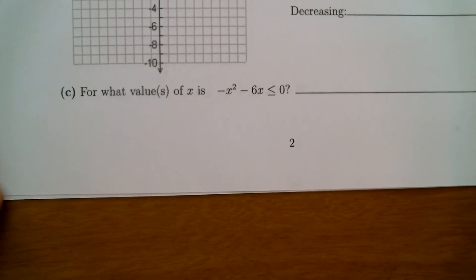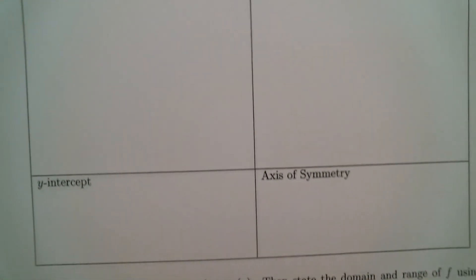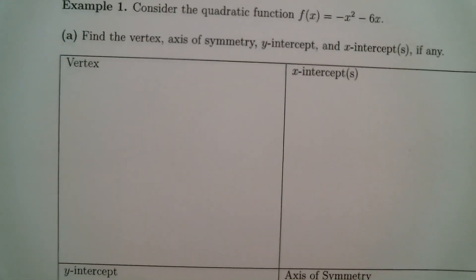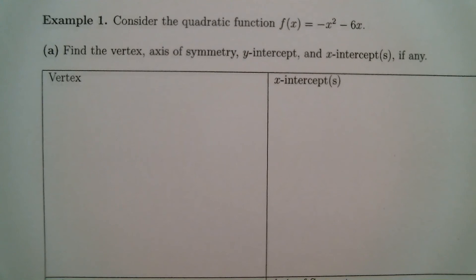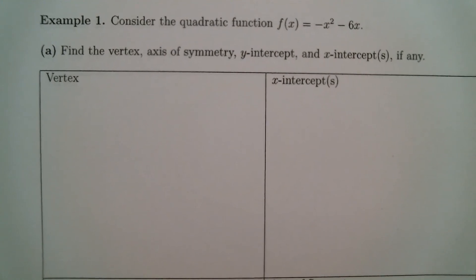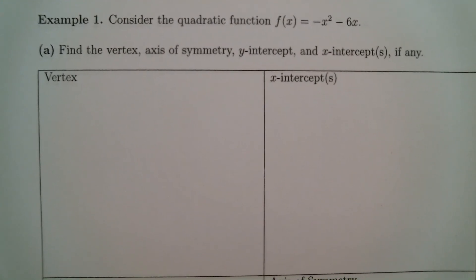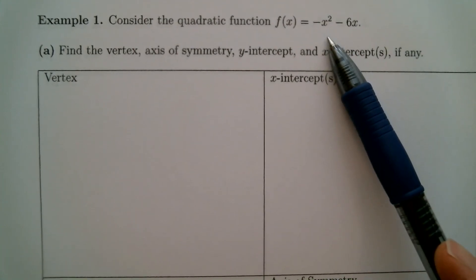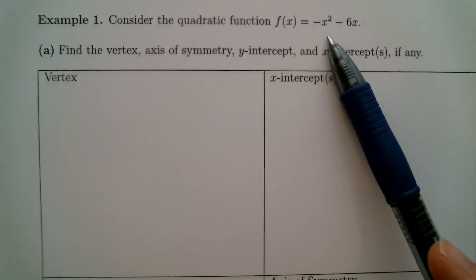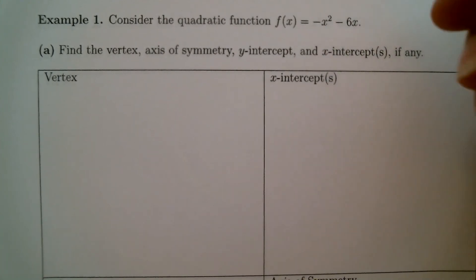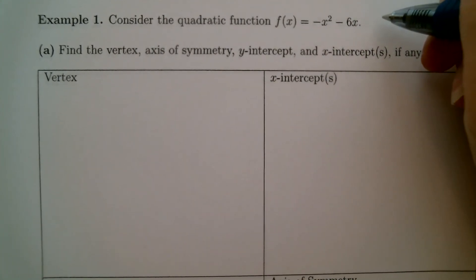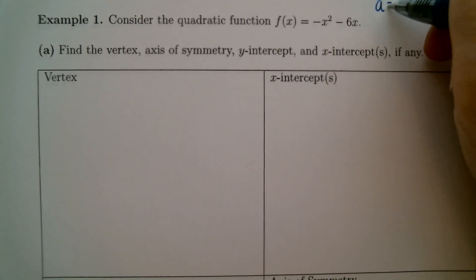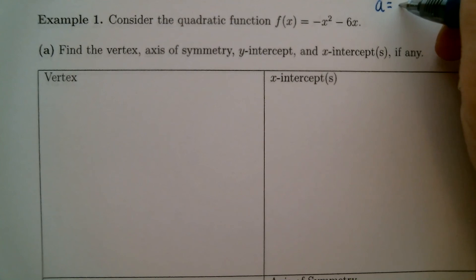Let's go back and take a look at this one — we're going to graph it and go through all the steps. This is how it will be laid out on your test. You should notice that this is a quadratic function; the highest power of x is 2. The a value is the number in front of x squared, which is negative 1.